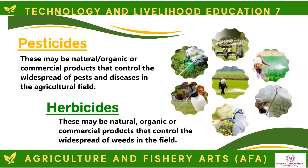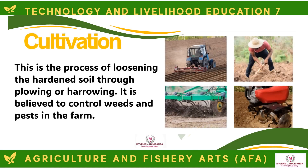Pesticides may be natural, organic, or commercial products that control the widespread of pests and diseases in the agricultural field. Herbicides may be natural, organic, or commercial products that control the widespread of weeds in the field. Cultivation is the process of loosening the hardened soil through plowing or harrowing, believed to control weeds and pests in the farm.